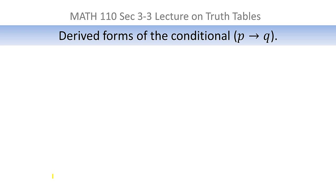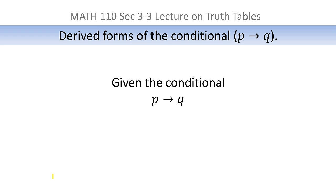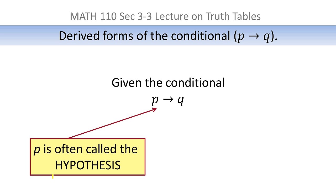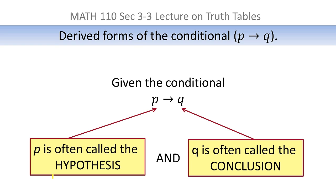There are certain forms of the conditional that have special importance, sometimes called derived forms. We're going to talk about the derived forms of the conditional p implies q. If you're given the conditional p implies q — or 'if p then q' — p is called the hypothesis and q is called the conclusion.